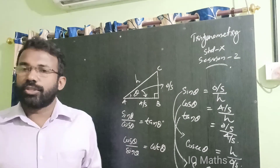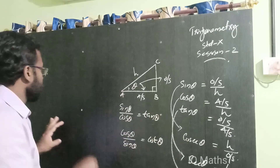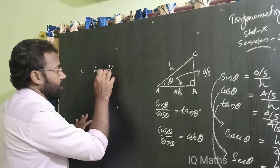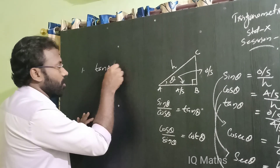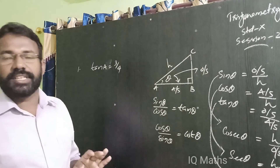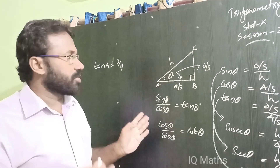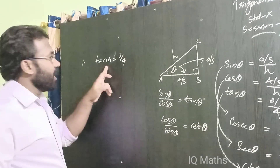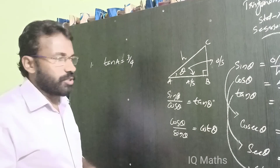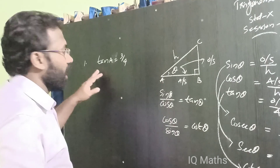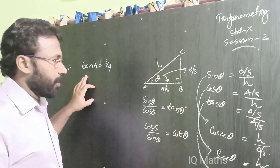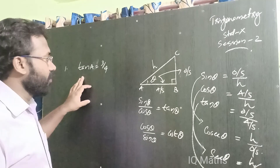Example 1: Given tan A is equal to 3 by 4, find the other trigonometric ratios. That means we have to find sin A, cos A, sec A, cosec A, and cot A.